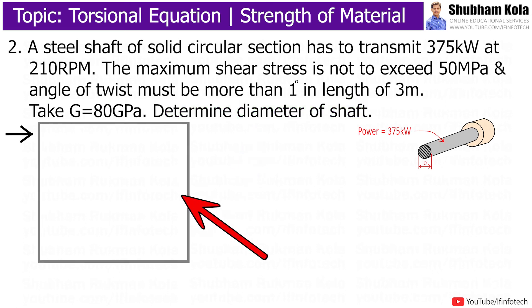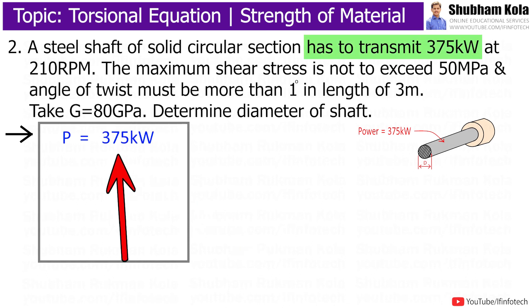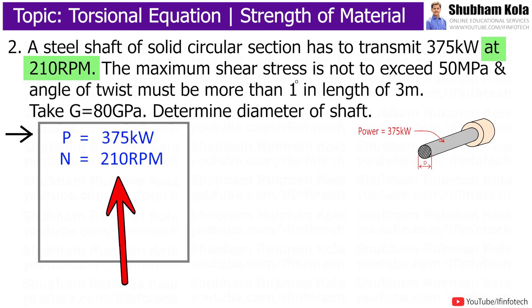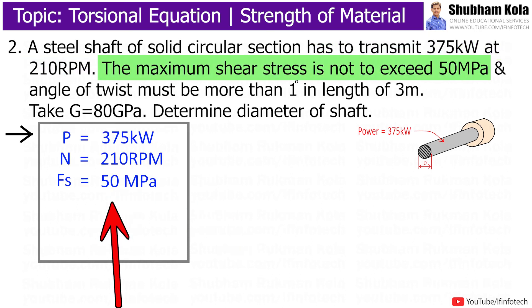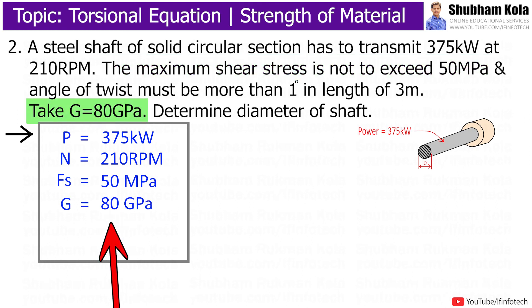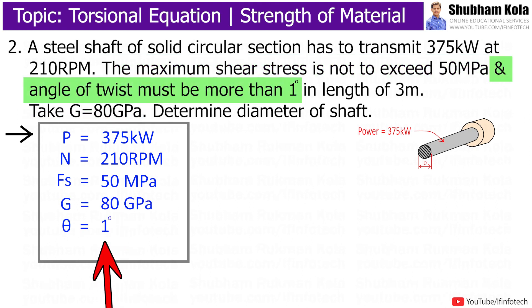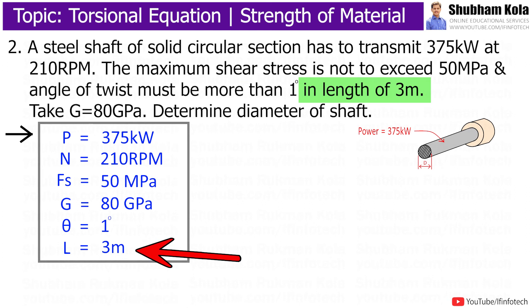First we will write down the data which has been provided. Power is 375 kW, speed is 210 rpm, Fs is 50 MPa, G is 80 GPa, theta is 1 degree, and length is 3 meters.